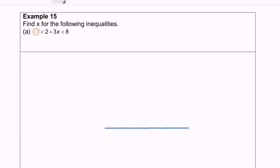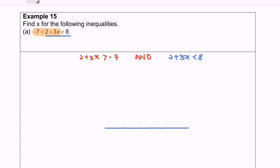Before we solve it, I'm going to split into two parts. So we have 2 plus 3x greater than negative 7, and for the second part, 2 plus 3x less than 8. Focusing on the left-hand side: 3x greater than negative 7 minus 2, we get 3x greater than negative 9. Dividing by 3, we get x greater than negative 3.